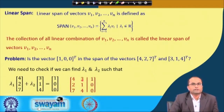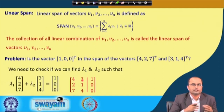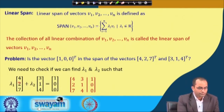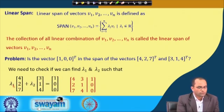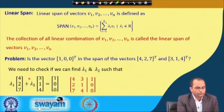To answer this we use the augmented matrix and row reduced echelon form. Note that the row reduced echelon form is very important — in almost all lectures we will be utilizing the idea of solving systems using Gauss elimination. Our equations are: 4λ₁ + 3λ₂ = 1, 2λ₁ + λ₂ = 0, and 7λ₁ + 4λ₂ = 0, giving augmented matrix [4 3 | 1; 2 1 | 0; 7 4 | 0].